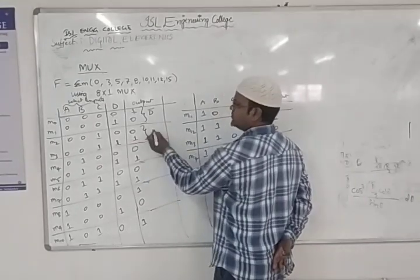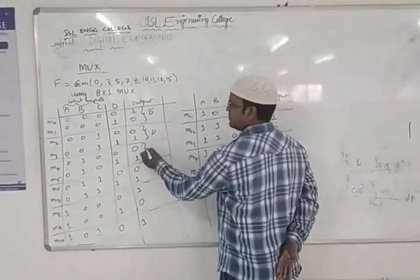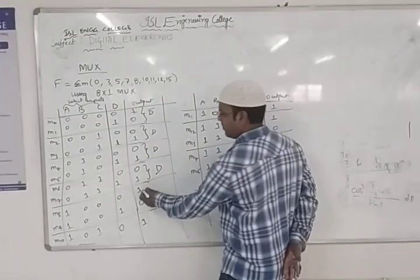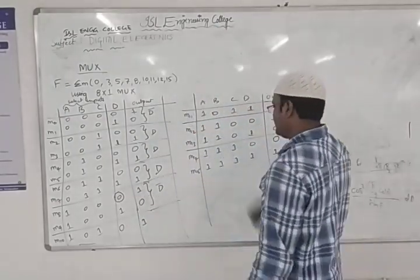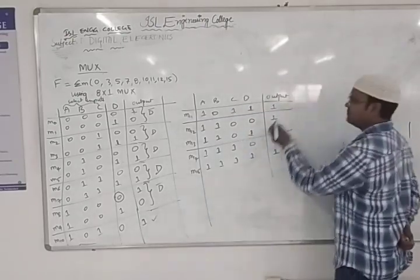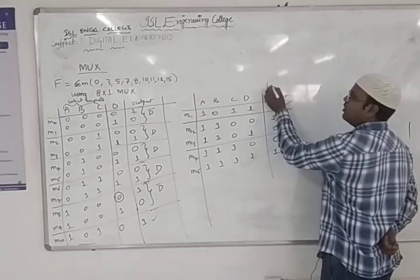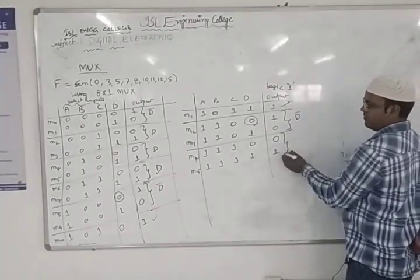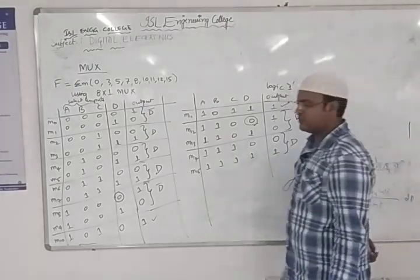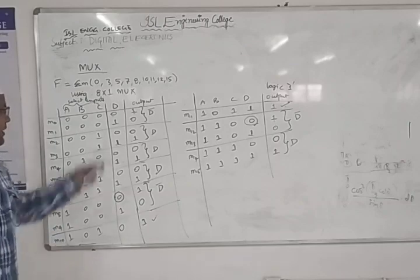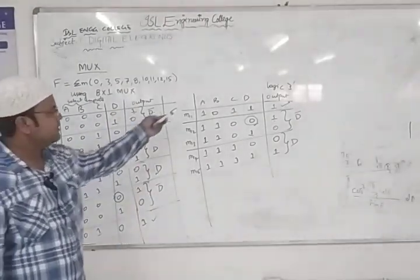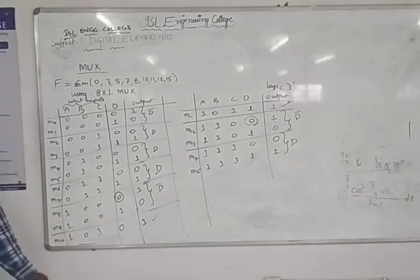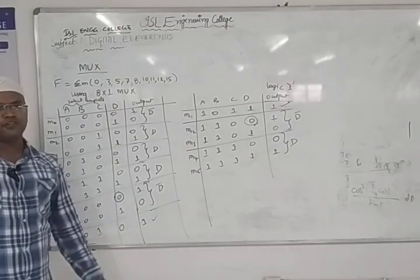We segregate into two parts based on D. When output is 1 and D is 0, that is D-bar. When output is 1 and D is 1, that is D. When both values (D=0 and D=1) give output 1, that is logic 1 (high). So we derive: some inputs are D-bar, some are D, and some are logic 1.